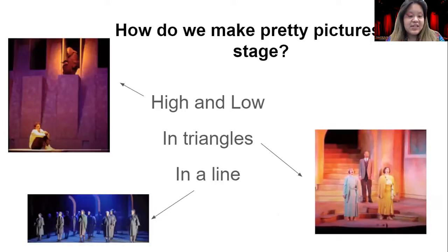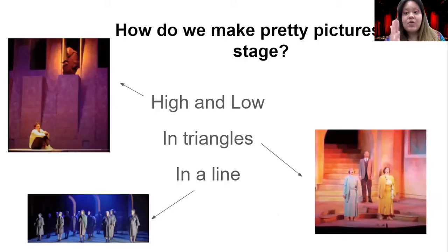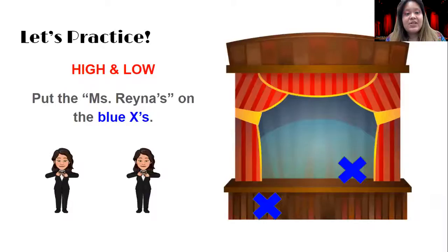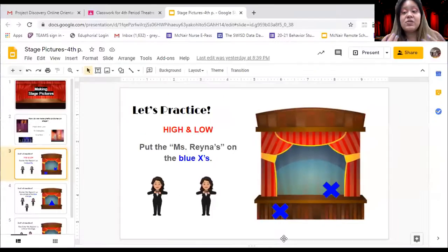The last way that we do this on stage is to put people in a line. The line can be a straight line across like my arm, or it can be a diagonal like this. We use lines on stage to show our audience when we want to keep things equal and measured, and give them something interesting to look at. Now you're going to practice high and low, putting people in lines, and using triangles.